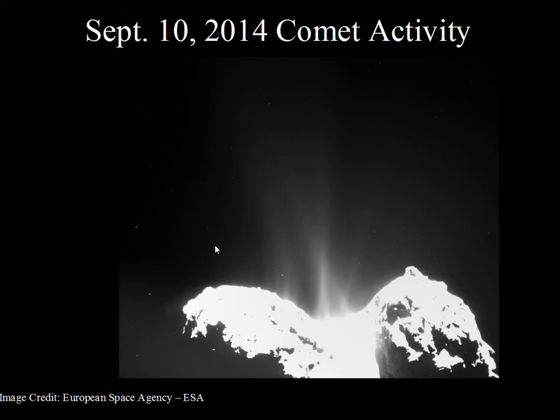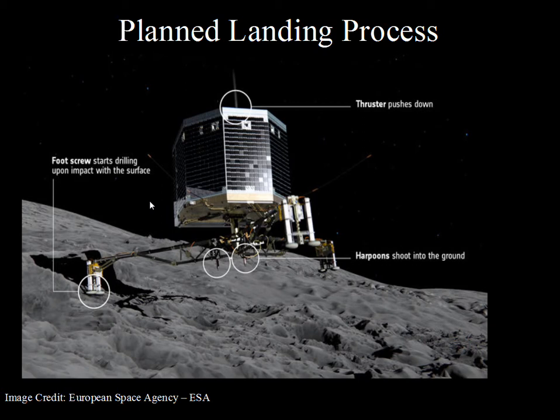The landing took place on November 12th, 2014. This drawing shows the intent: the Philae lander would come down at about one mile per hour, slowly approaching the surface. As it reached the surface it would anchor itself with foot screws, harpoons, and a thruster to push down as the harpoons were fired out.